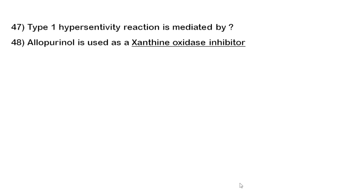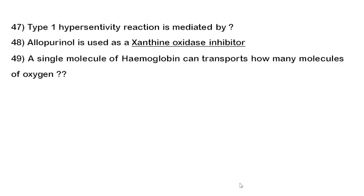Forty-eighth question: allopurinol is a drug used for gout treatment. Allopurinol inhibits xanthine oxidase and is considered a xanthine oxidase inhibitor.